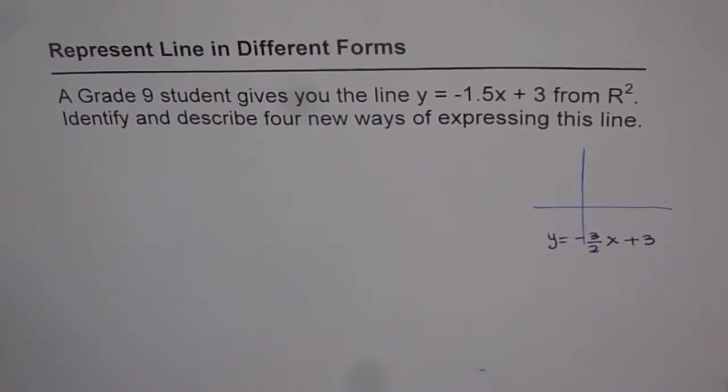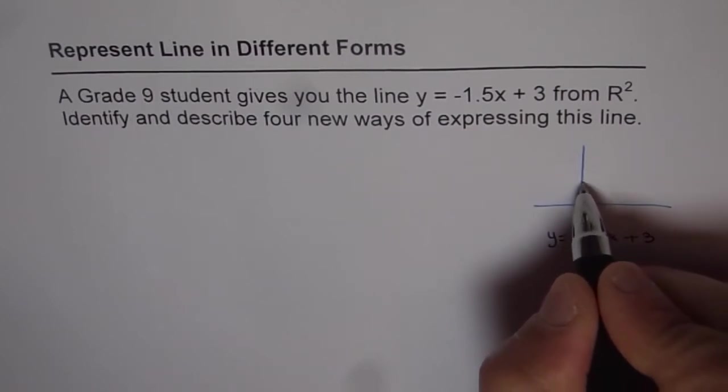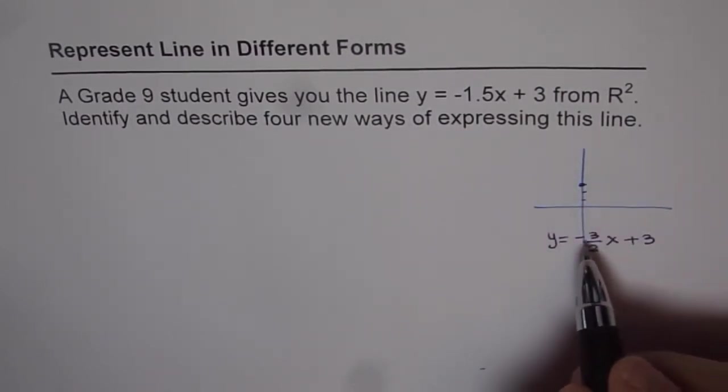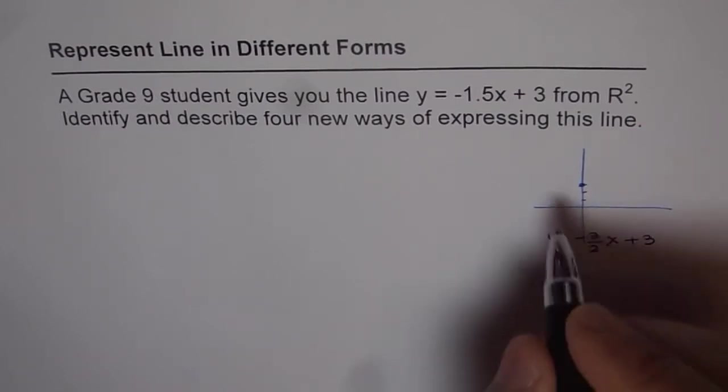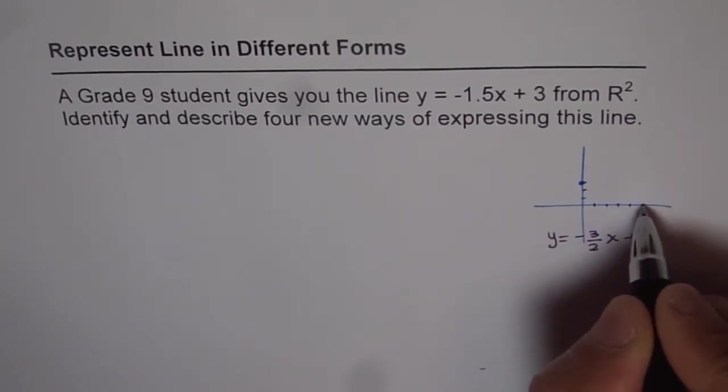Now, this line truly means that there is a y-intercept of 3, which is 1, 2, 3 here, and the slope of -3/2. So in case we want to draw this line on the Cartesian plane, how should we do it?